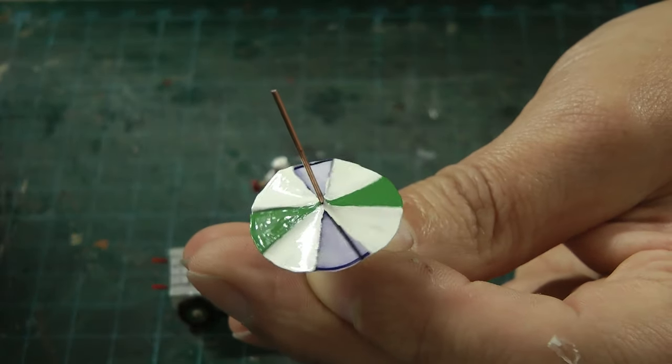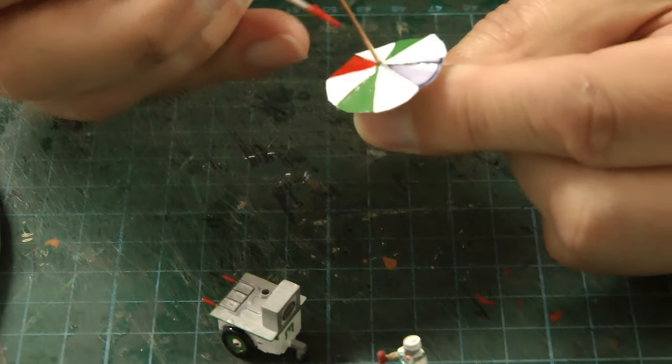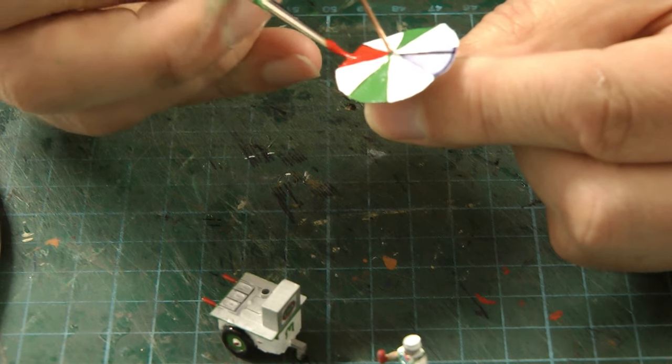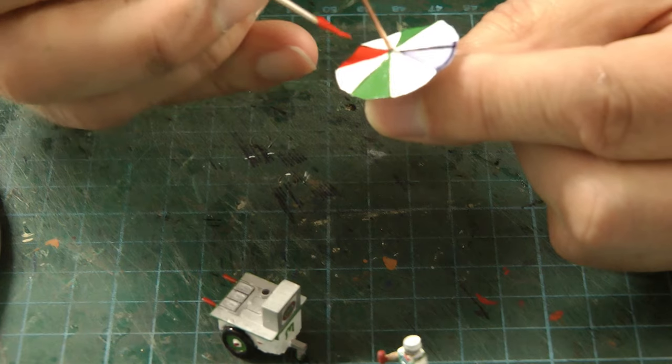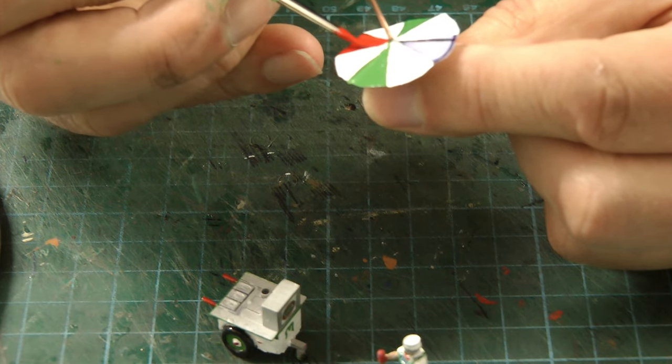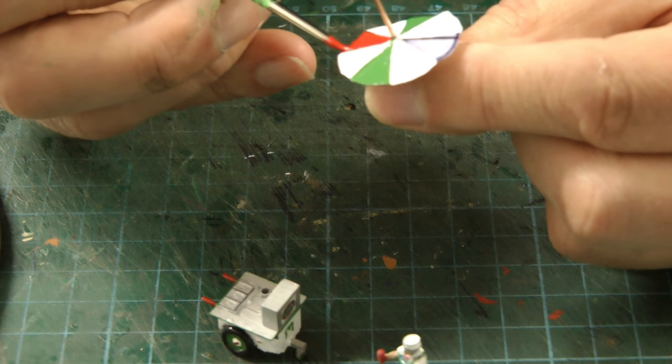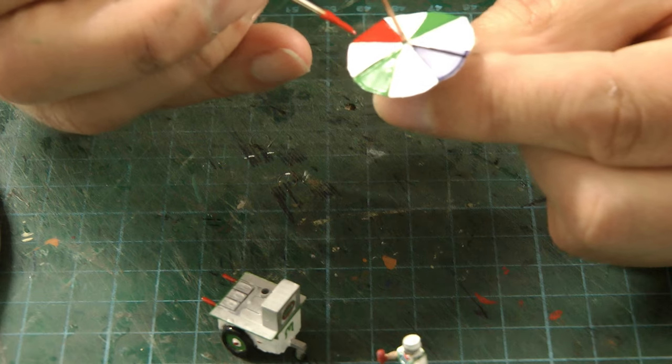Yeah, I find this very therapeutic painting. So now we're just adding the red to finish off this parasol. So I've mixed a little bit of clear gloss with some matte red just to get the satin finish I'm after.